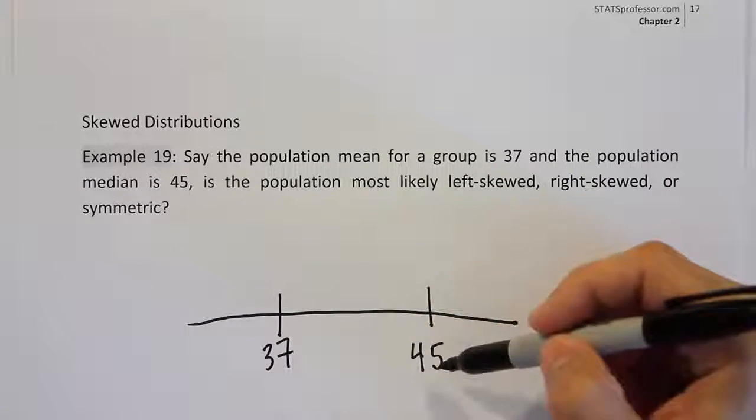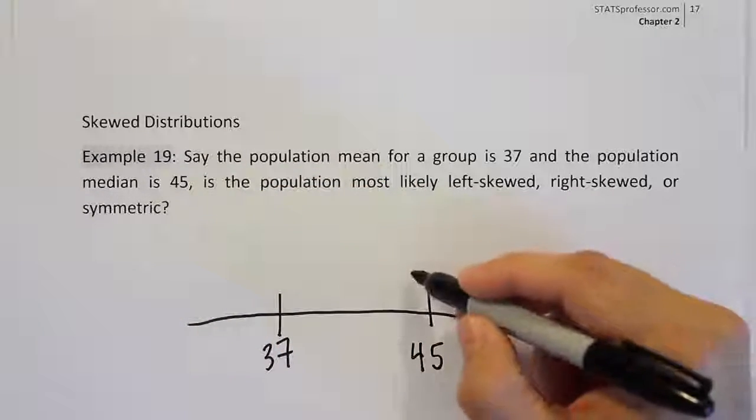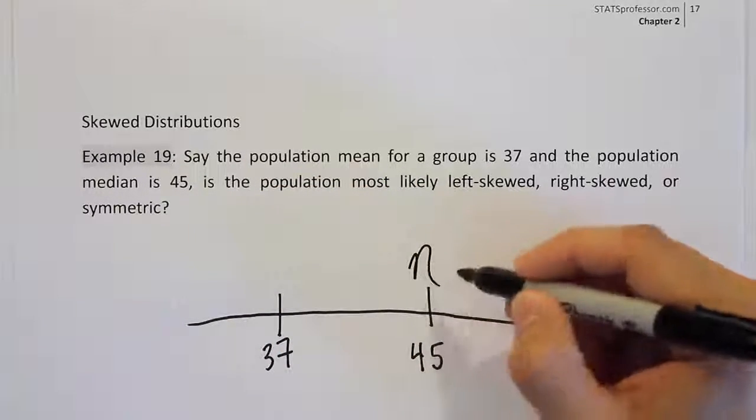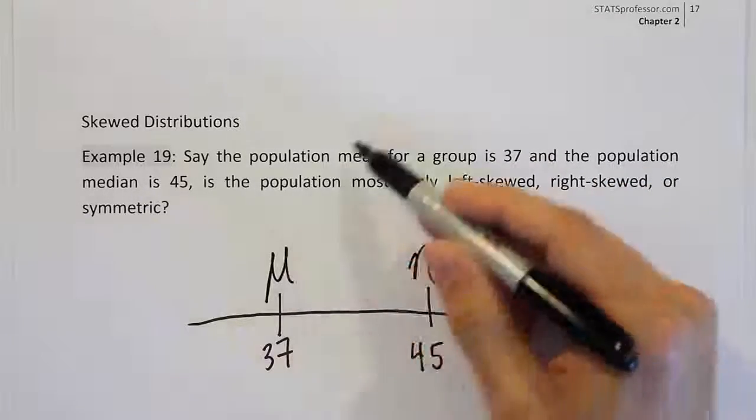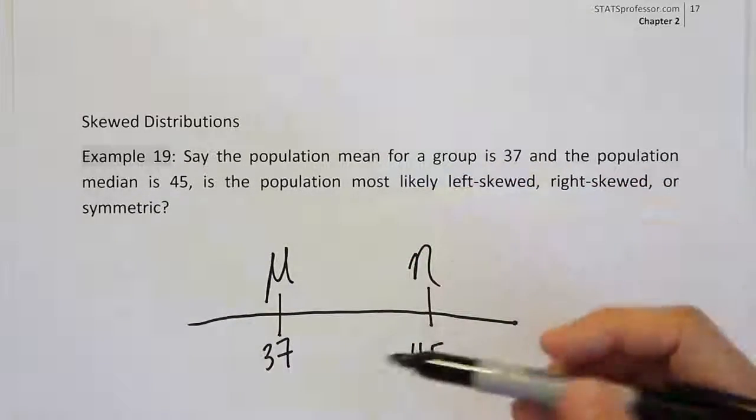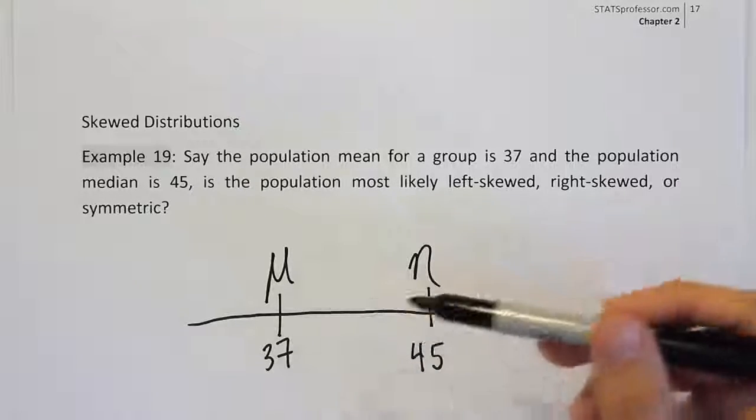Now, the only question is, what's the 45? Well, in the problem, it says it's the median. So we're going to use the symbol for population median, that's eta. And then, the symbol for population mean is mu. So the population mean is 37. So what we see here is we see that the mean is on the left of the median.